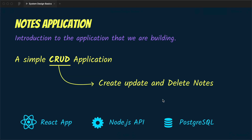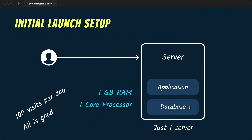Let's say that we are building a notes application that lets users create, read, update, and delete notes. It's a simple React application that talks to a Node.js API and everything is stored in a PostgreSQL database. Our application is ready and now it's time to deploy it to the server so that people can use it.